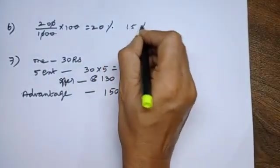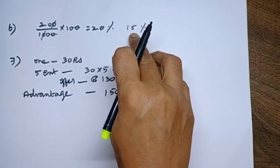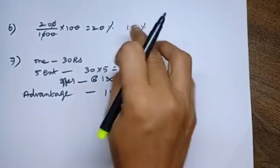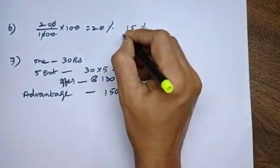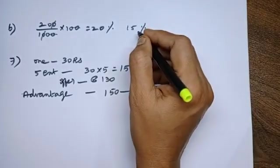Equal to 20%. Another shop give what? 15% only. So, obviously, we should buy where? First shop. We would buy this one.